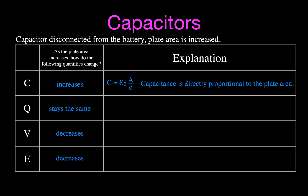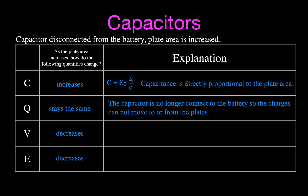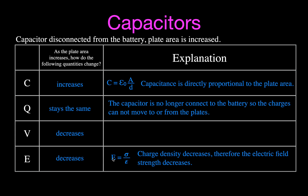The capacitance increased because the area of the plates increased - those are directly proportional. The amount of charge stays the same because you can't remove the charge once disconnected. The electric field strength decreases because the charge density decreases: the plates got bigger but the amount of charge remained the same, so the density of charge on those plates decreased. Charge density and electric field strength are directly proportional, and the voltage decreases because it's directly proportional to the electric field strength.